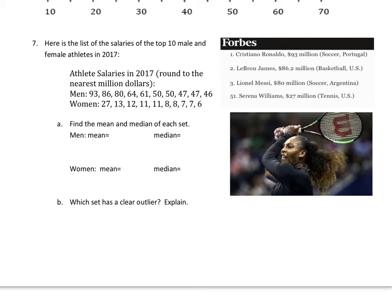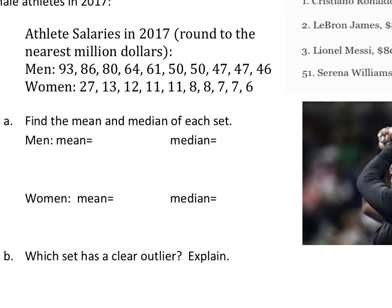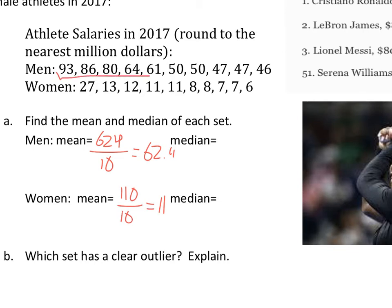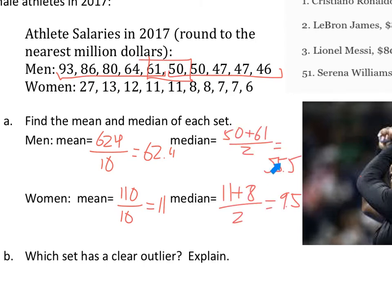Now let's look at athlete salaries and compare. For male athletes, the total is 624, divided by 10 gives a mean of 62.4 million. For female athletes, the total is 110, giving a mean of 11 million. These are all in millions of dollars. The median: we have 10 values, so we average the middle two — 55.5 for the men and 9.5 for the women.